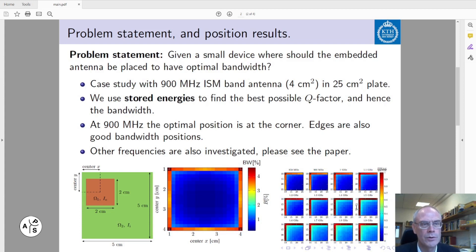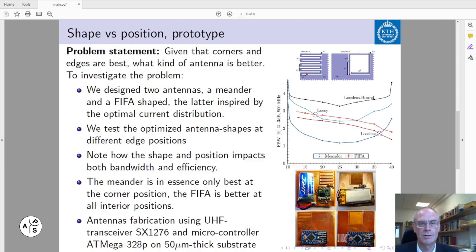Once we know that the corners and edges are the very best positions, we are interested in finding antennas that realize these results. We investigated the meander type antenna and the FIFA antenna. For each position along the axis, we optimize the shape of these antennas to find the best fractional bandwidth that can be obtained in each region.